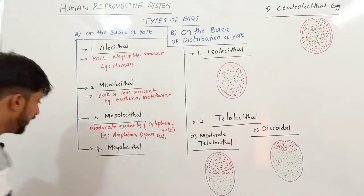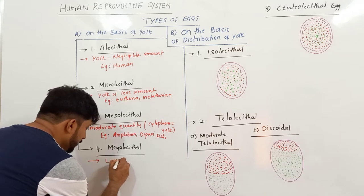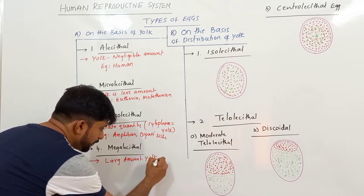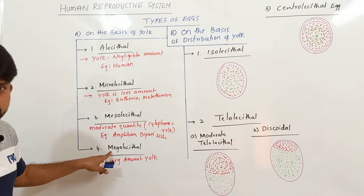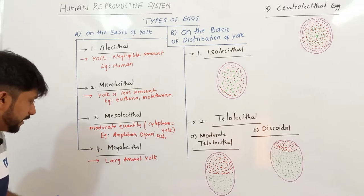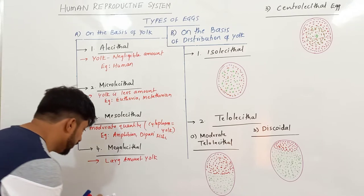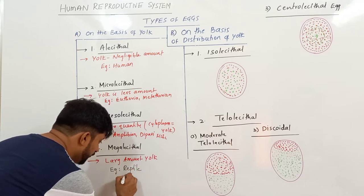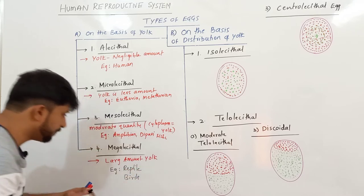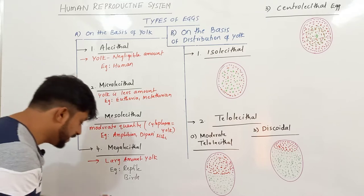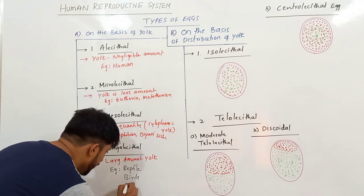Megalicethal eggs have a large amount of yolk — more than the cytoplasm. Megalicethal can also be known as Macrolicethal because more amount of yolk is present. Such eggs are found in reptiles, birds, and also in insects.